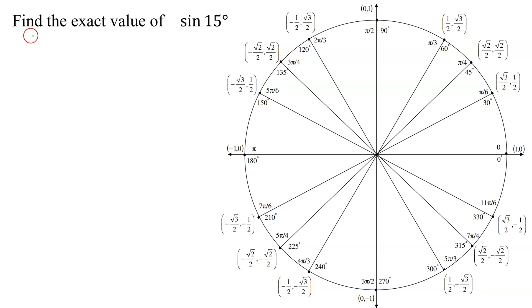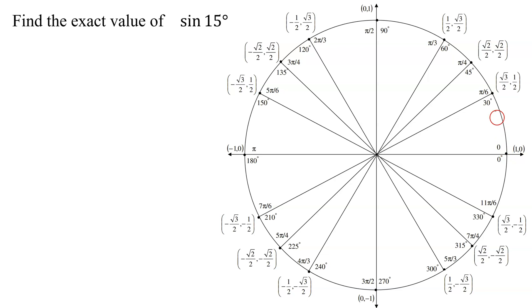In this example, I need to find the exact value of the sine of 15 degrees. Since it says exact value, I can't use my calculator because that will give me a decimal approximation. I'm going to have to use my unit circle here, but notice 15 degrees is not on my unit circle.